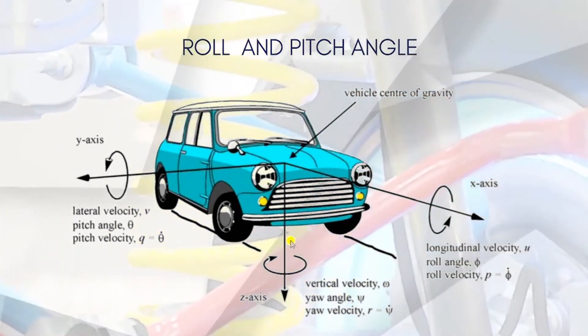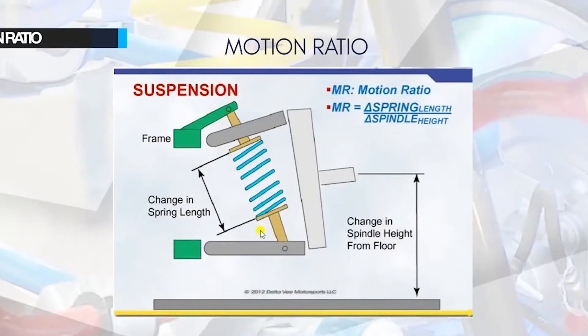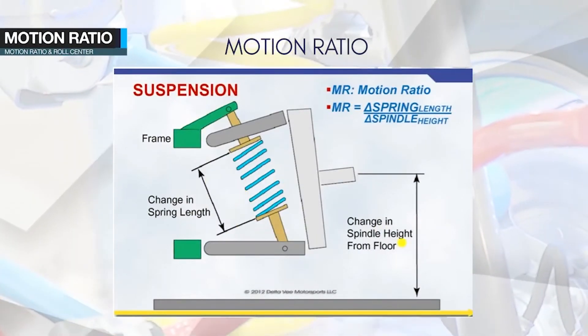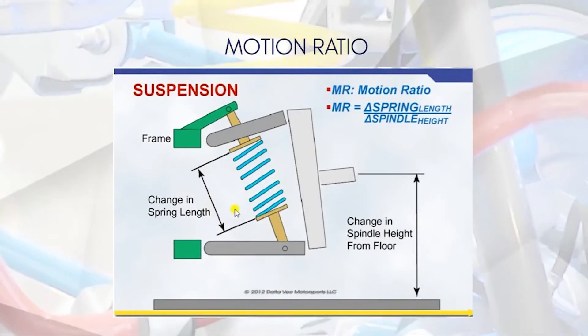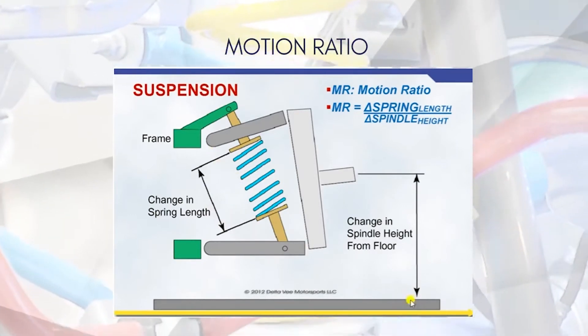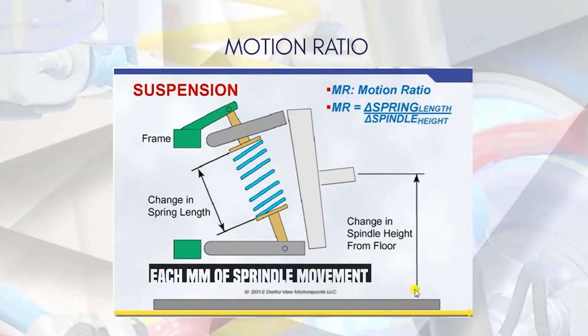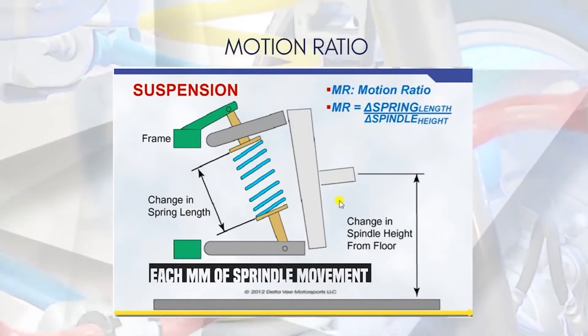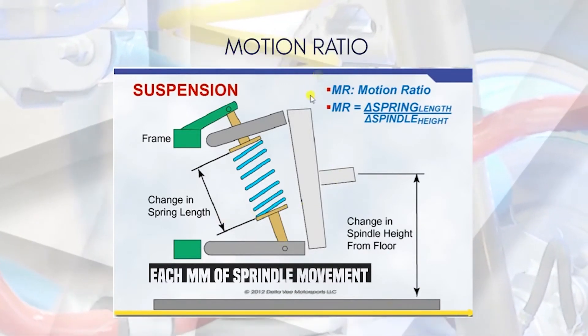Now, once we have learned what a roll and pitch angle is, let's go to the motion ratio. Motion ratio is nothing but how much your spring compresses for each millimeter of your spindle movement.